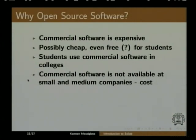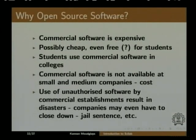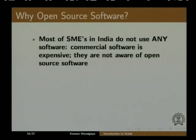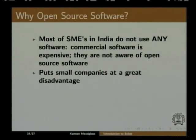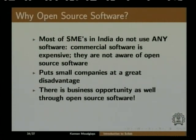Many of our companies in India are small and medium scale by global standards. If somebody uses unauthorized software in companies there will be disasters — companies may have to close down, there could be jail sentences. In fact there will be an agreement that the employee has to sign on joining the company that they will not use any unauthorized software. So most SMEs in India do not use any software because commercial software is very expensive, and if they use it illegally they will get into trouble. This puts companies at a great disadvantage. But there is also a business opportunity through open source software — it is possible for a budding entrepreneur to start a company using open source software and create simulations using Scilab for companies, ISRO, BARC, and so on. There is no alternative to open source software.